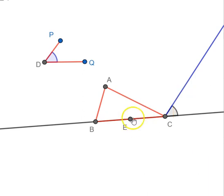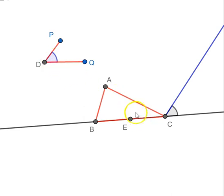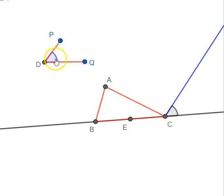Now we have to construct a line passing through E which is parallel to the line we just constructed. We can do that by copying this angle here — copying the corresponding angle. These two angles are corresponding angles: if we copy this angle here, we can be absolutely sure that the two lines are going to be parallel, because these two angles are corresponding, with EC as the transversal.